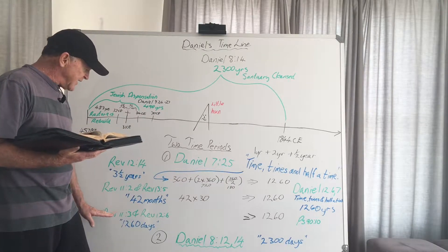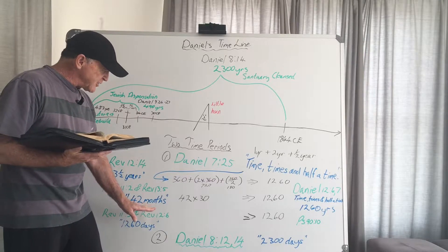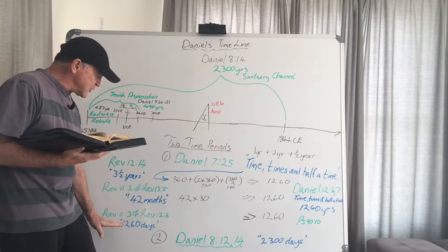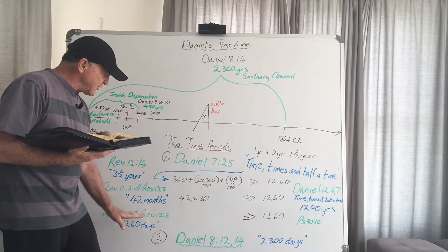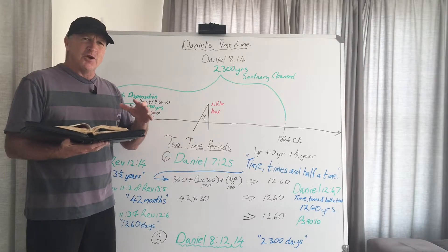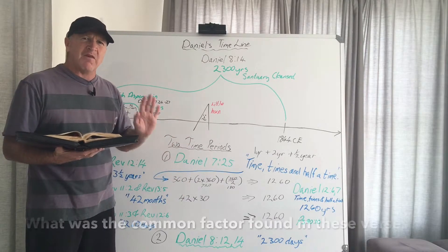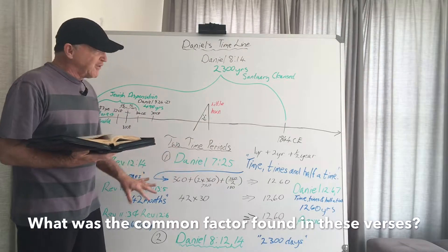And then we saw how that in Revelation chapter 11 verse 3 and Revelation chapter 12 verse 6 that it actually talks of the 1,260 days. And I asked you to do a little bit of homework and to try and find out what was the common factor in all of these verses.